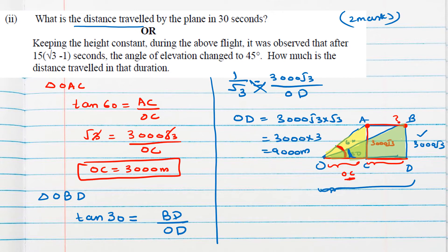Now, this full length is 9000 and this is 3000. Can we find the remaining CD? Yes, if we subtract OC from OD, that is 9000 - 3000, we can find the distance traveled in 30 seconds by the plane, which is 6000 meters. This distance is the required distance.